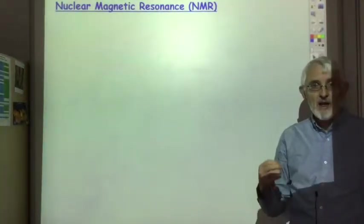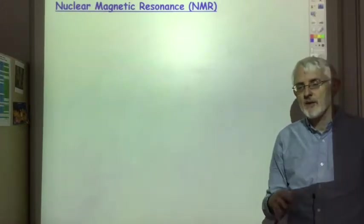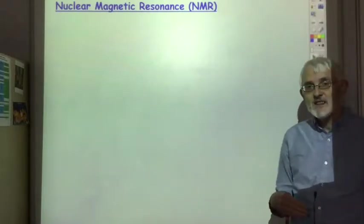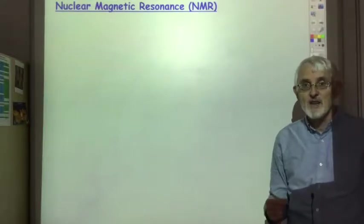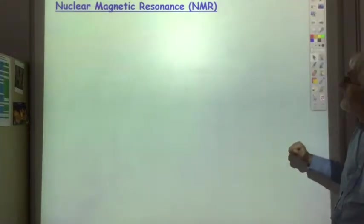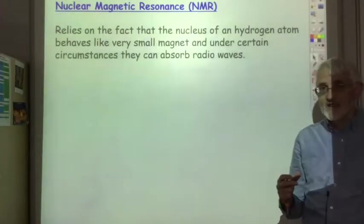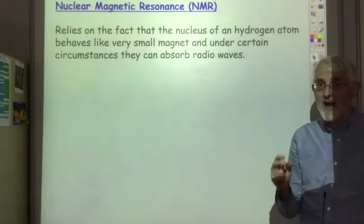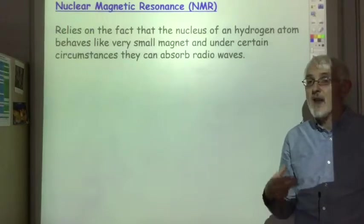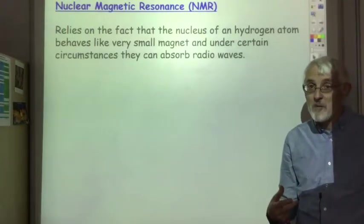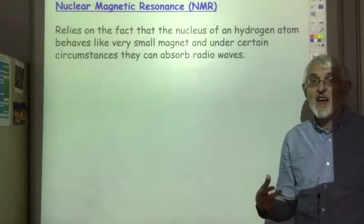Before we look at the actual spectra we get from NMR, we need to have a superficial understanding of how the data is acquired. In this case it relies on the fact that the nucleus of hydrogen atoms can absorb radio waves. Under certain circumstances the hydrogen nucleus will act like a very small magnet and absorb radio waves, so we're just measuring the absorption of radio waves by the hydrogen atoms. From NMR spectra we're going to get information about the environment the hydrogen atom is in.